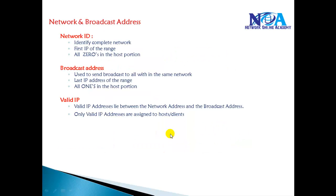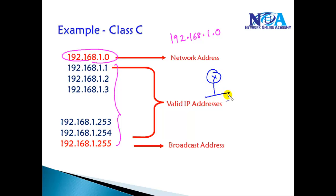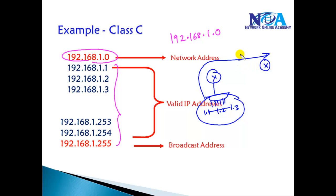The network ID is the first address of the range, which identifies the complete network, and has all zeros in the host portion. For example, 192.168.1.0 identifies the complete network. When dealing with routing concepts, instead of listing 192.168.1.1, 1.2, 1.3, and so on, we represent the complete network with one address — 192.168.1.0. This first IP address of the range is the network address and cannot be assigned to any device.